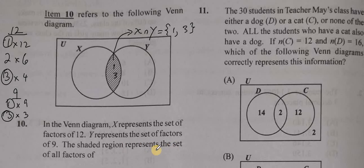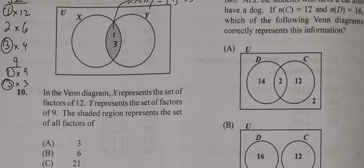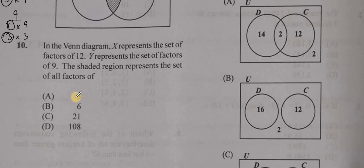So the shaded region represents the set of all factors of 3, 6, 21, and 108. So 1 and 3 are factors of 3. They are actually all the factors of 3. The only factors of 3 would be 1 and 3 because only 1 times 3 gives us 3.